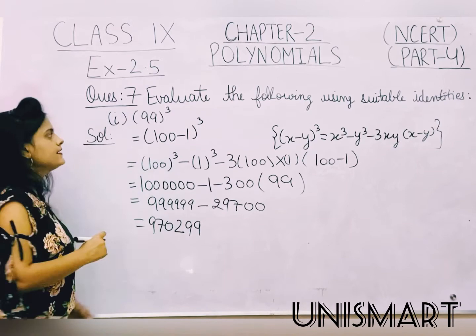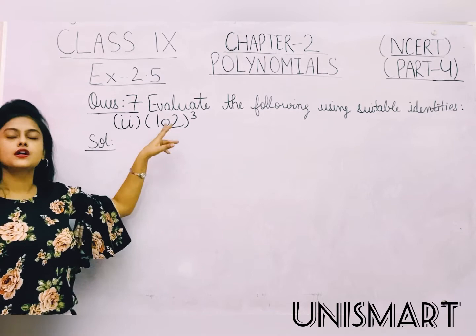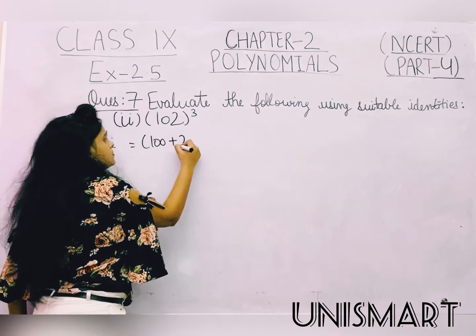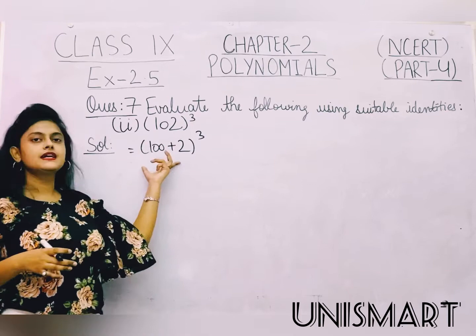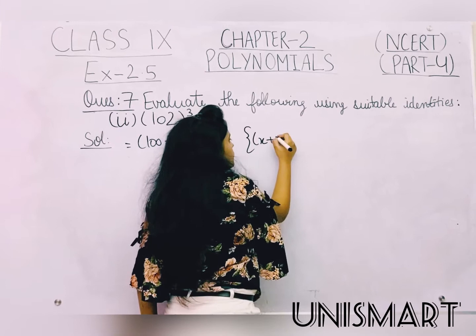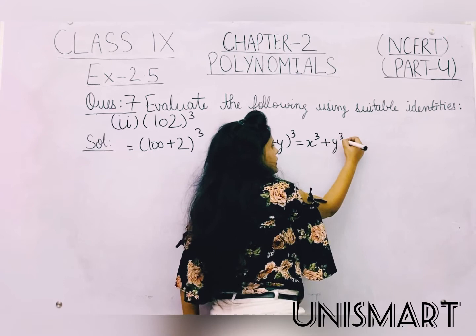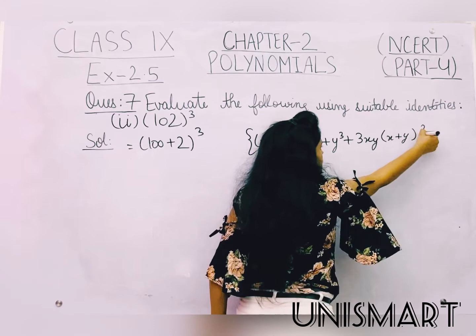Ab yaahan bhi identity apply karni hai. 102 ka cube diya hua hai. So ab hum ise likh sakte hain (100 plus 2) ka whole cube. Yeh humara 102 ka cube bhi banega — A plus B ke whole cube ki identity. So (X plus Y) whole cube is equal to X cube plus Y cube plus 3XY(X plus Y). Ab yeh identity hum yaahan apply karte hain.